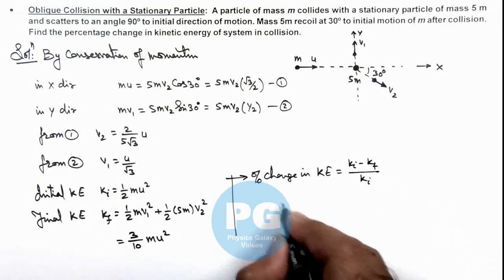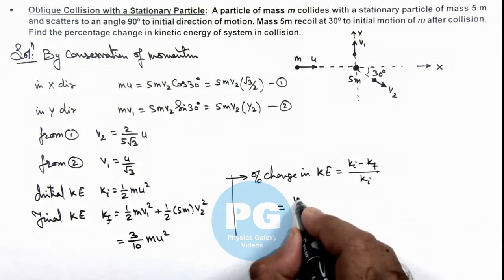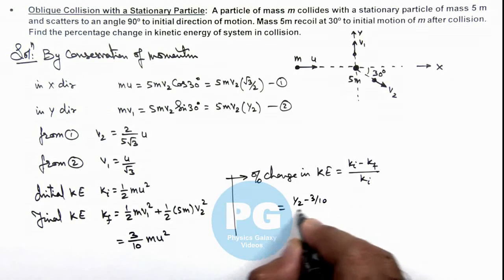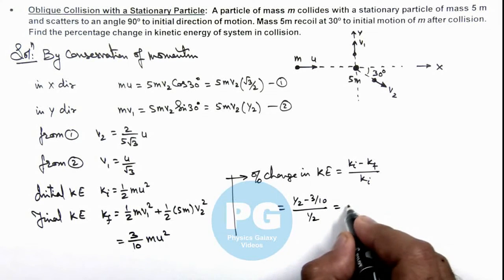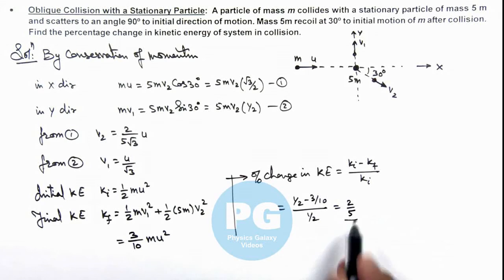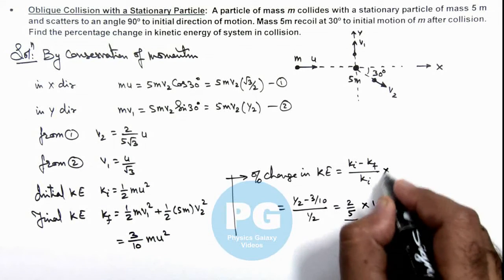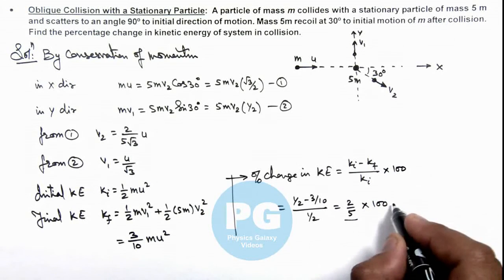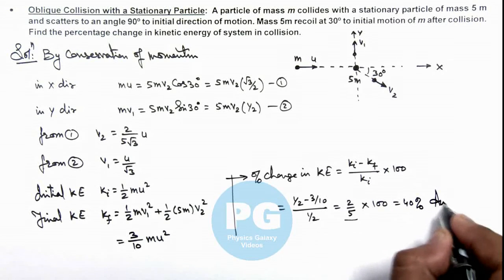So if you substitute the values, m·u² gets cancelled out, it is 1/2 minus 3/10 divided by 1/2, which is equal to 2/5. This is the fractional change, so percentage change we multiply by hundred, so in percent this is 40 percent. That will be the final result of this problem.